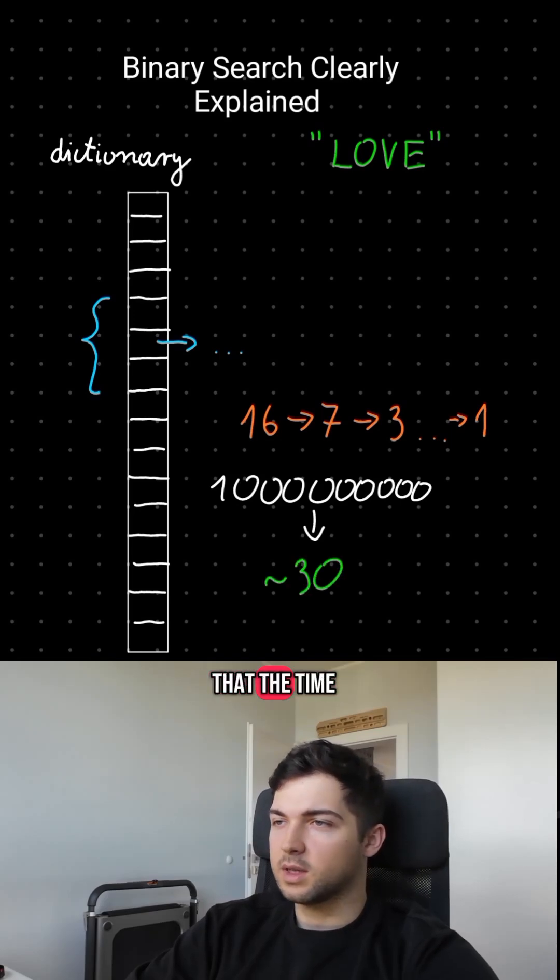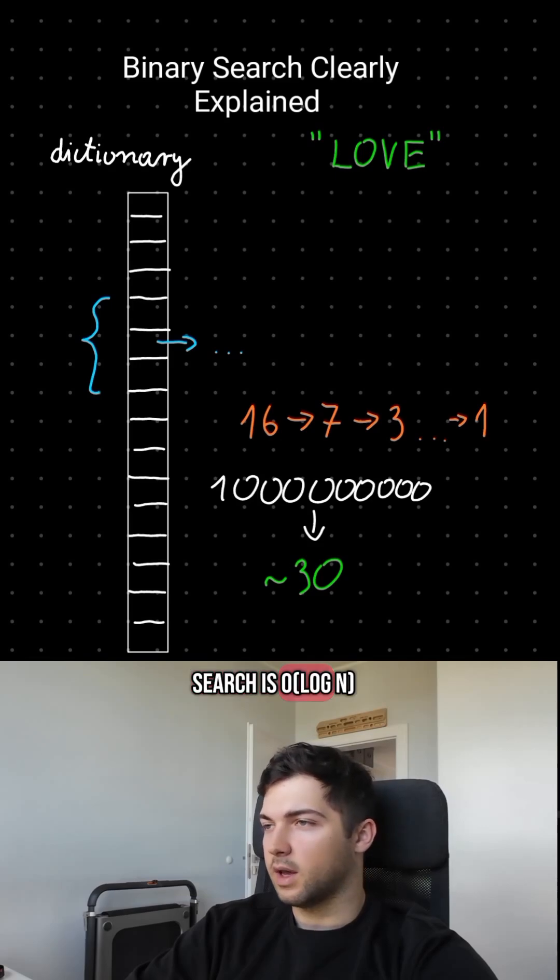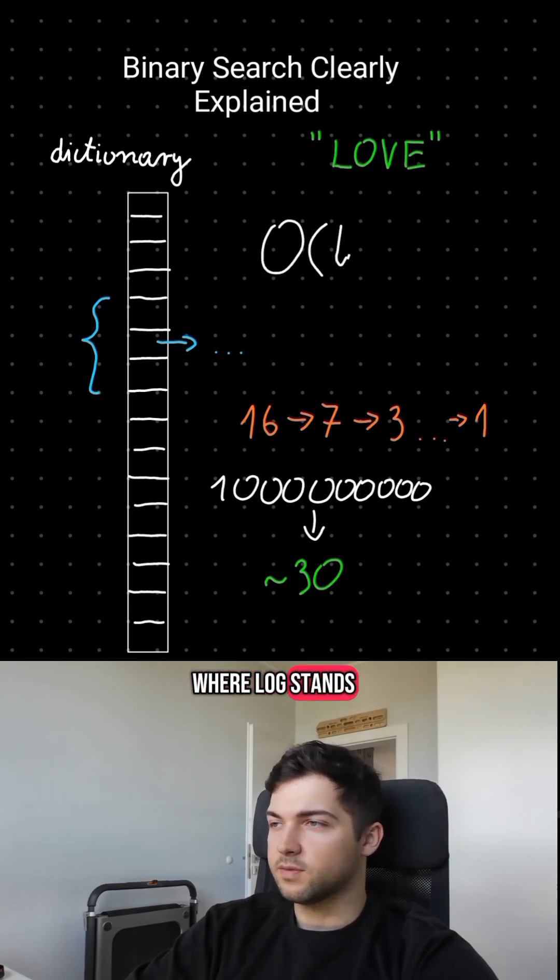Formally, we say that the time complexity of binary search is O(log n), where log stands for log base 2 and n is the size of the array.